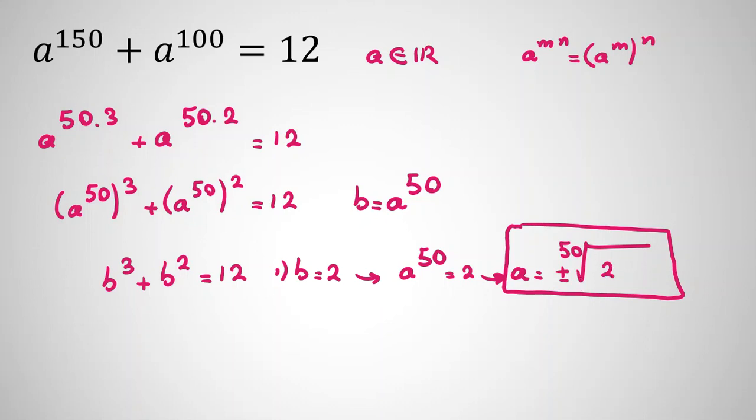In the second part, we can say that b equals 2 is one root. If we take all things here, b cubed plus b squared minus 12 equals 0, we can factorize. One factor is b minus 2. Now, we want to create b cubed, so we place b squared.